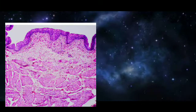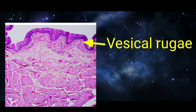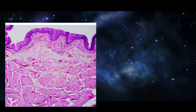The empty bladder shows several mucosal folds. The mucosa is folded into temporary folds called rugae, or more specifically vesical rugae. The superficial cell layers take a dark eosinophilic stain.